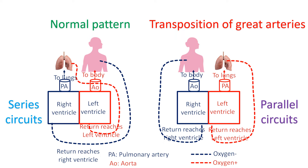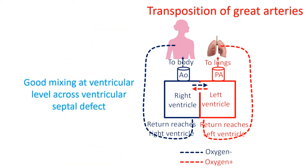Life is impossible in transposition of great arteries unless there is a good mixing of the blood within the heart by a defect in the wall between the upper or lower chambers. These mandatory defects could be an atrial septal defect between the upper chambers or a ventricular septal defect between the lower chambers. Alternatively, a connection between the pulmonary artery and the aorta — which is normally present in the baby in the womb — can persist after birth as patent ductus arteriosus, causing mixing. When there is good mixing, part of the mixed blood goes to the lungs for oxygenation and life is possible.